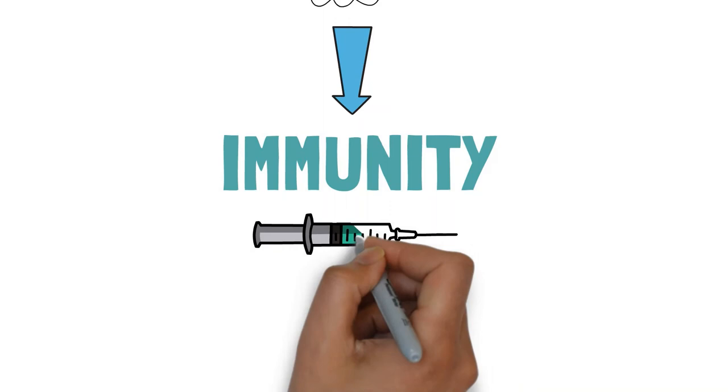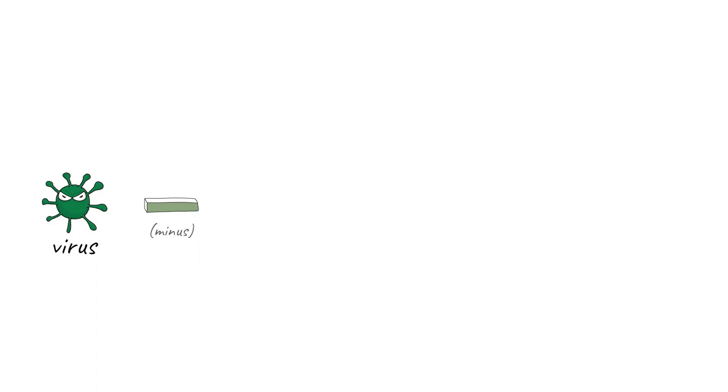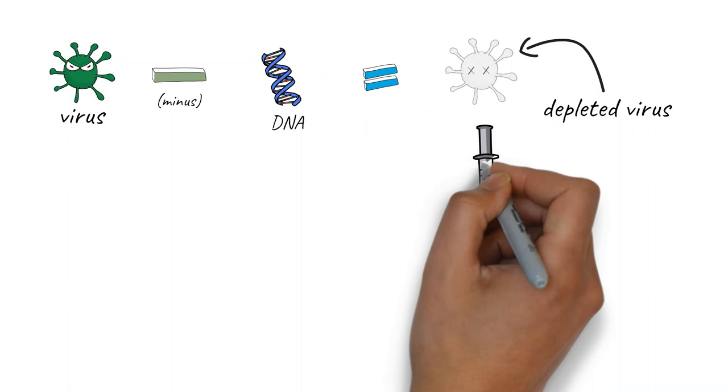Vaccines work by teaching your body to make antibodies without having to meet the real virus. So scientists take the virus or one very similar to it and remove the parts that damage you, which is usually the genetic material or DNA. What is left is a depleted virus, something that cannot hurt you but which still triggers the B cells.